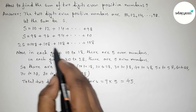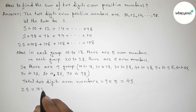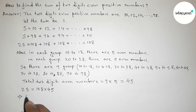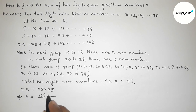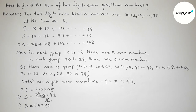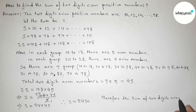We can now write 2S equals 108 multiplied by 45. Simplifying, S equals 108 times 45 divided by 2. Dividing 108 by 2 gives 54, so S equals 54 times 45, which equals 2430.